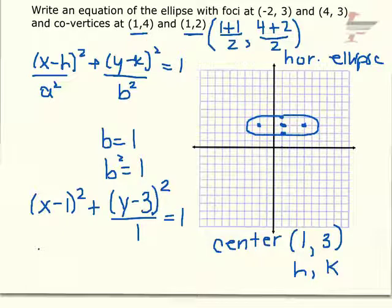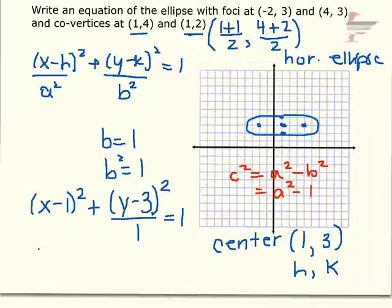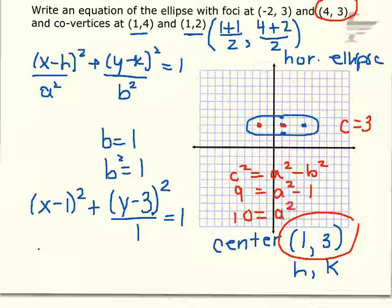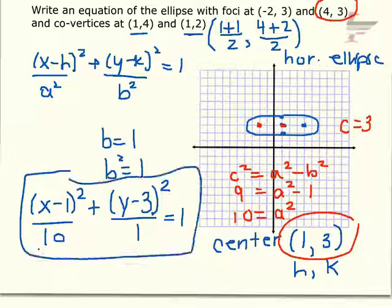I can find c using the formula c² = a² − b². The distance from center (1, 3) to focus (4, 3) is 3 units, so c = 3 and c² = 9. Plugging in: 9 = a² − 1, so a² = 10. Therefore, the equation of the translated ellipse is (x − 1)²/10 + (y − 3)²/1 = 1.